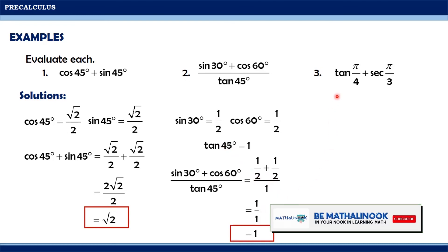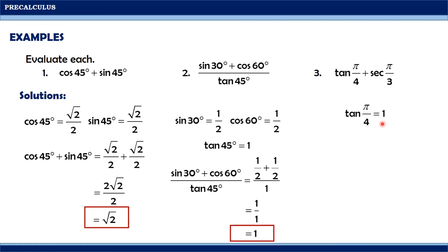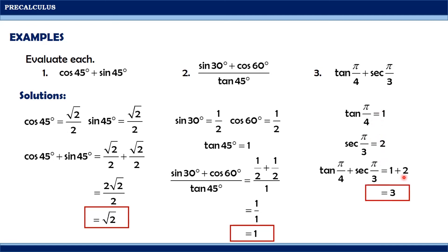For the last example, we have tangent(π/4) plus secant(π/3). Since the angles are in radian measure, we convert them to degrees: π/4 equals 45 degrees and π/3 equals 60 degrees. Therefore, tangent 45° equals 1 and secant 60° equals 2. By substitution, 1 plus 2 equals 3, so the expression has a value of 3.